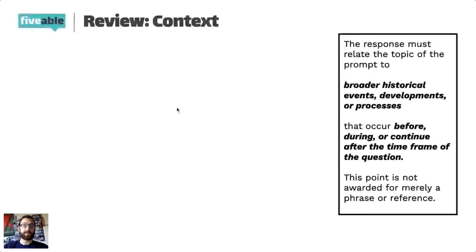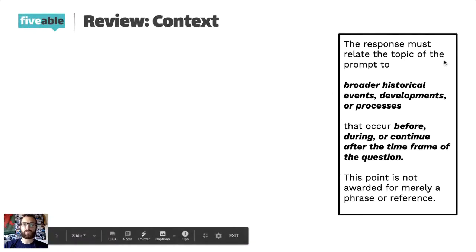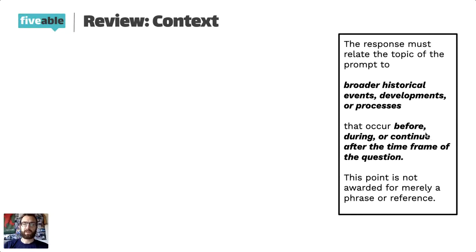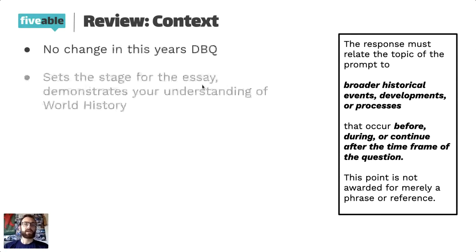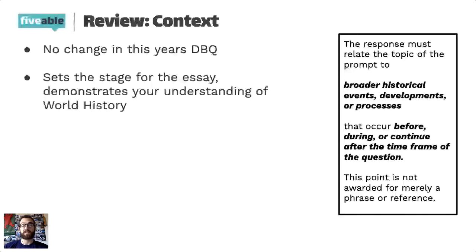Let's quickly run over context before we dive into actual technology. I've taken the College Board description for context in a DBQ and bolded some of the more important parts. Notice how, about midway down the description, it talks about 'before, during, or continuing after the time frame in question.' So context can go before or after your time frame. DBQs will be somewhere between 1200 and 1900, possibly longer. Context sets the stage for history and for your essay — it demonstrates your understanding of history. A lot of students ask: where do you put context? Do you put it at the beginning or the end?